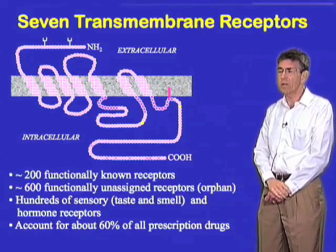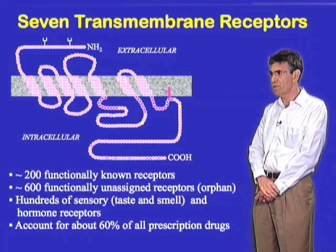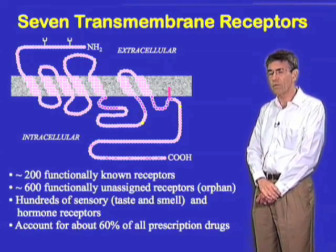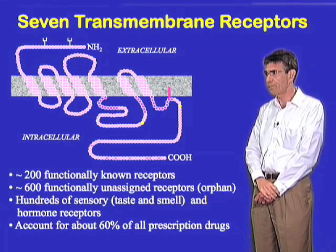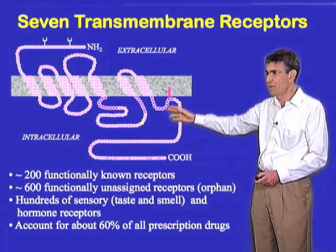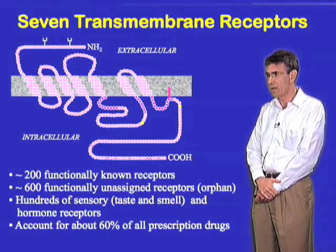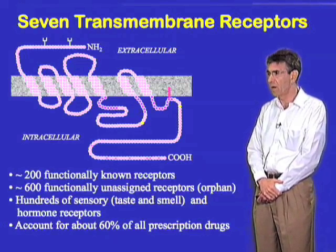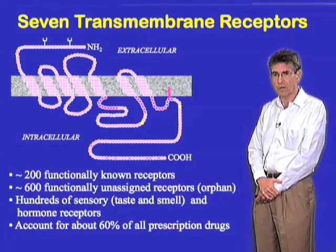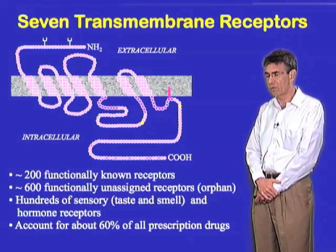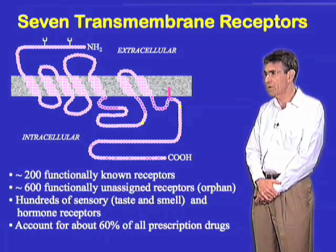This remarkable family of receptors contains about 800 to 1,000 members and regulates virtually all known physiological processes in mammals and humans. In particular, many of the sensory receptors, such as those that mediate taste, smell, and vision, are members of this family, as are so many drug receptors, such as those for beta-blockers, antihistamines, and glucagon, to mention just a few.